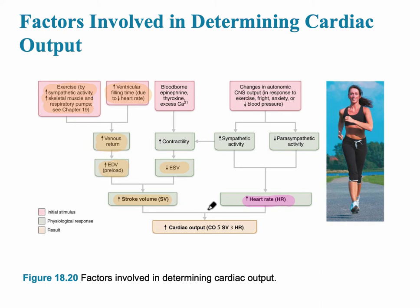Now let's look at the end-systolic volume — that's the amount of blood remaining after systole, after contraction of the ventricle. One thing that increases contractility is the forcefulness with which the ventricle contracts. There are also various hormones and chemicals that can increase that.